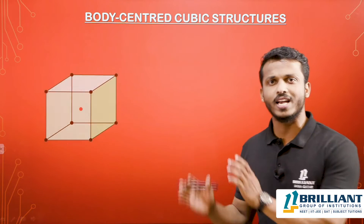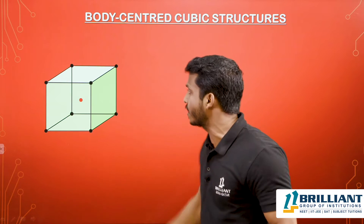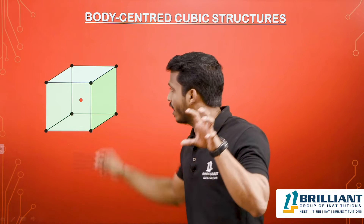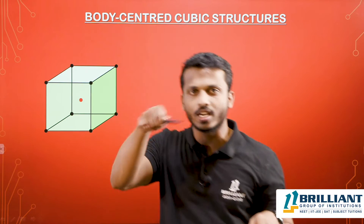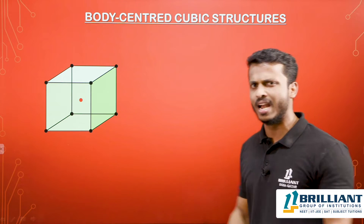This is a body centered system. What is meant by body centered? The constituent particles — the spheres — are present at all eight corners plus one sphere at the center of the body. This is called a body centered unit cell. So in a body centered unit cell, the constituent particles are present at all eight corners with one sphere inside exactly at the center of the body.